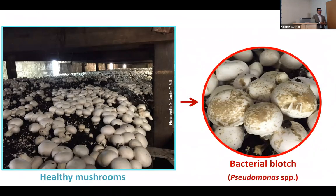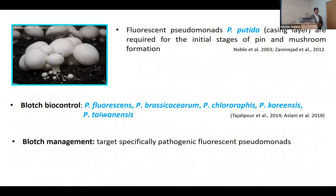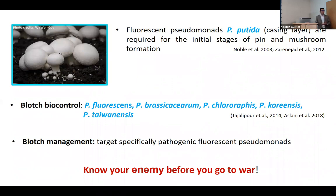Looking at the other side of the picture, we have different beneficial Pseudomonas also associated with mushrooms. In fact, most of them are beneficial — very few are pathogenic. Some of them, like Pseudomonas putida, are actually required in the initial stages of pin formation to help mushroom development. Others have been shown to control blotch disease. So when thinking about managing disease, it's important to target only those pathogens and not the beneficial microbes — know your enemy before you go to war. You don't want to kill your ally.